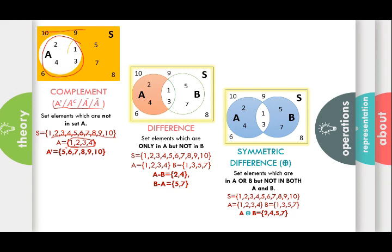The difference operation is important because which set is on the first-hand side is crucial. To find A minus B, I consider only set A's elements and check whether each is present in B. If 1 is in B — yes, remove it. If 2 is in B — no, keep it. If 3 is in B — yes, remove it. If 4 is in B — no, keep it. So A − B = {2, 4}. Similarly, B − A = {5, 7}.